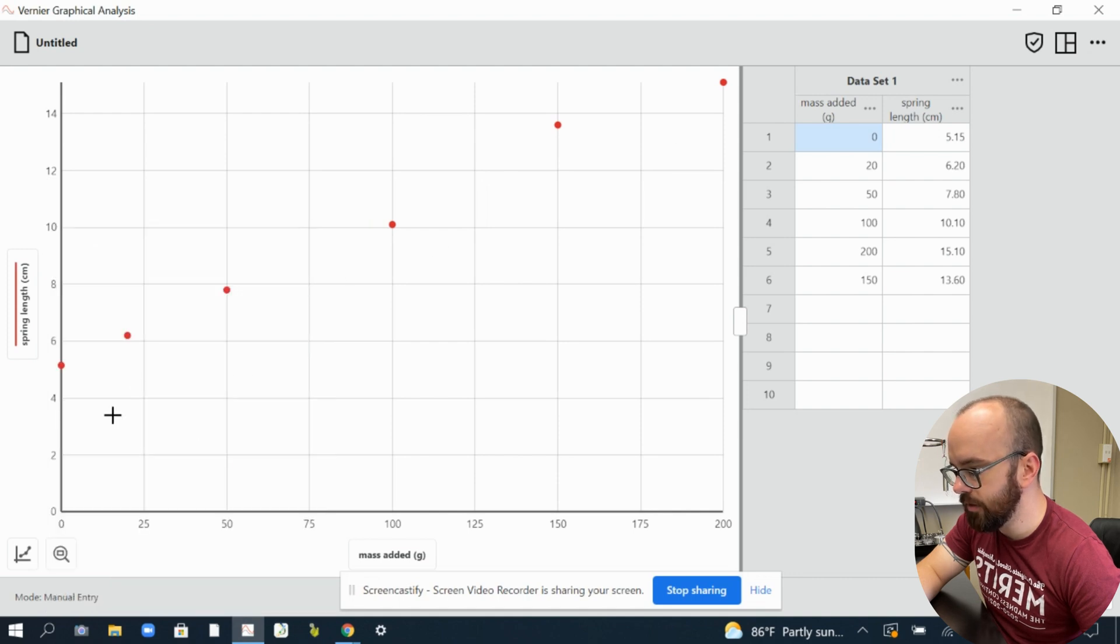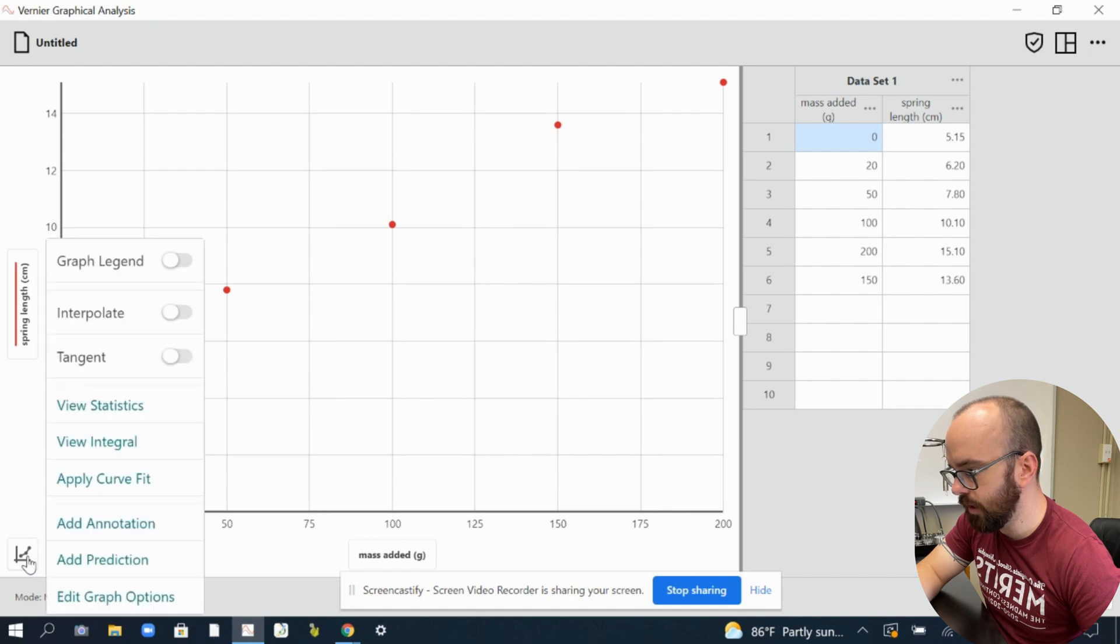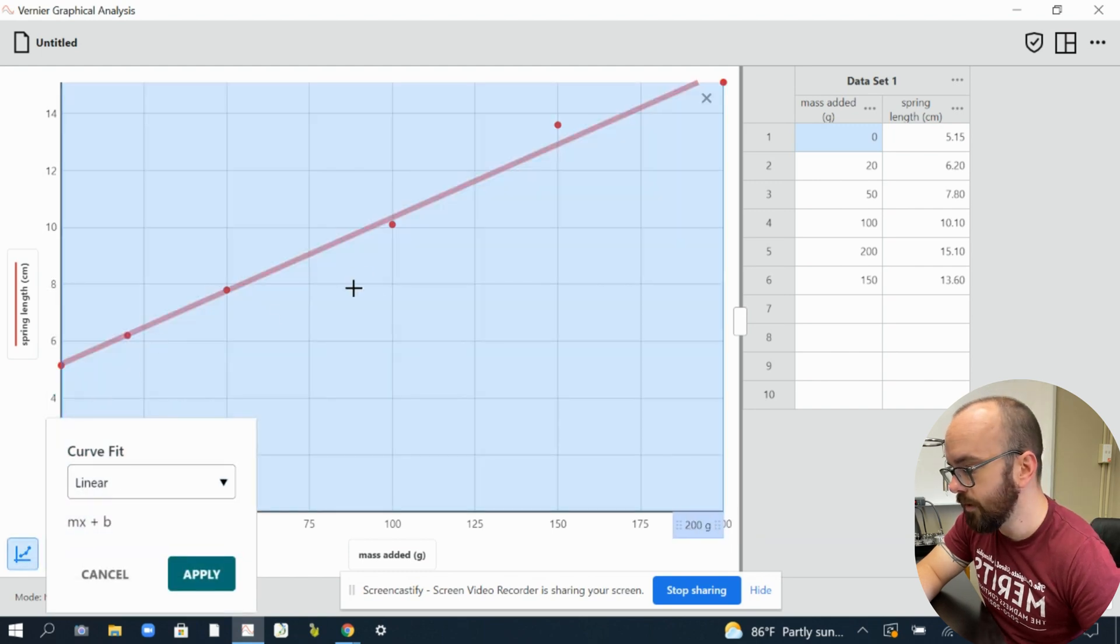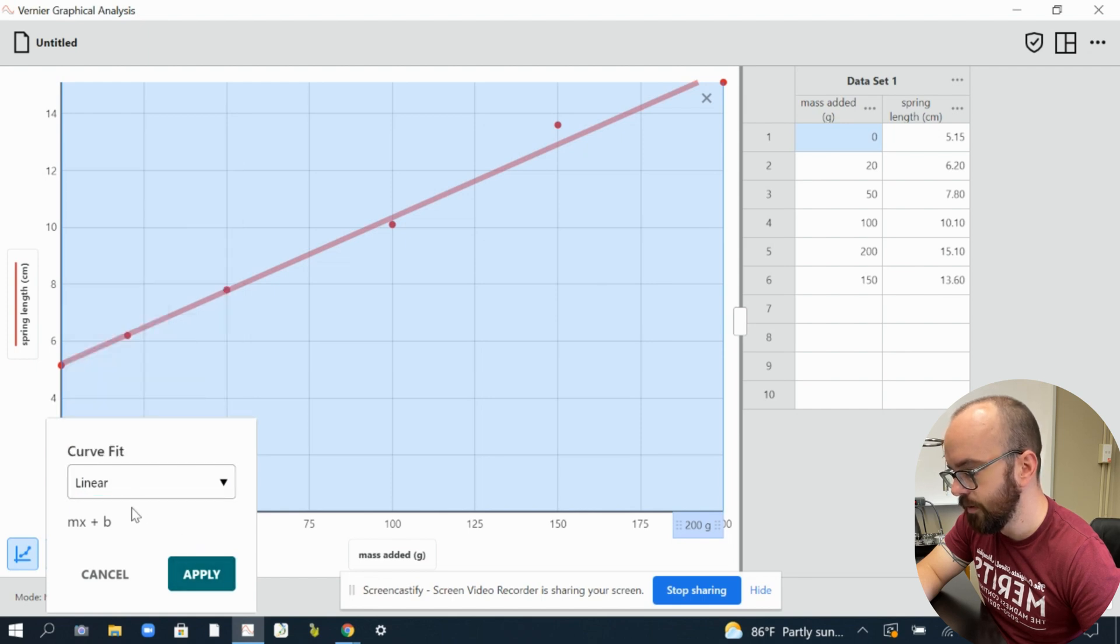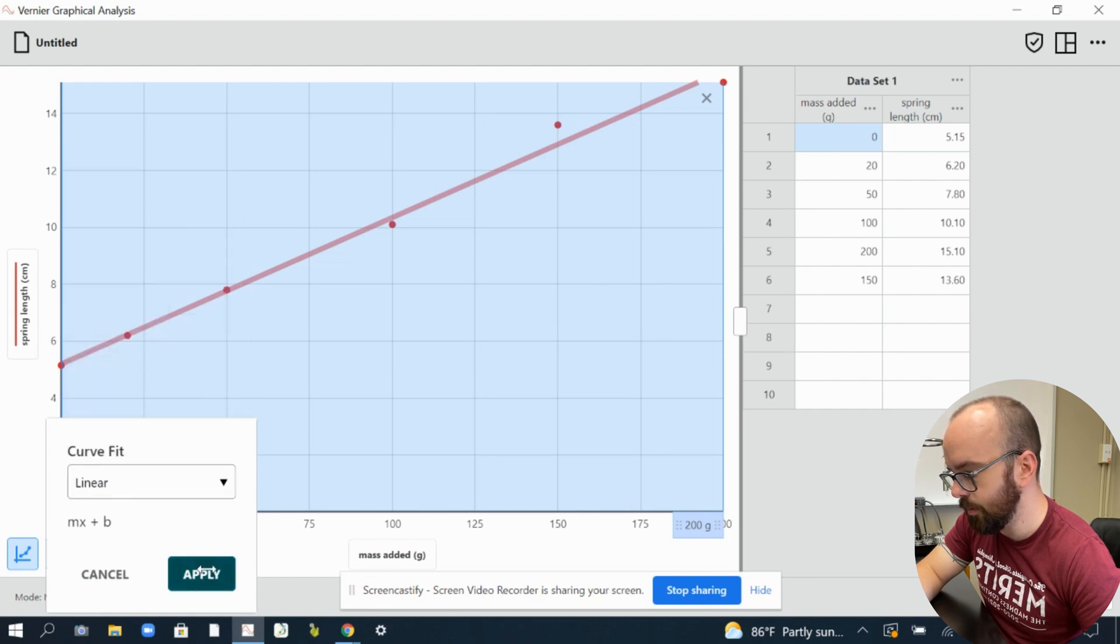So the next thing I want to do to actually do the trend line is I'll click there and I'm going to apply a curve fit. They don't call it a trend line, they call it a curve fit. And so I've got a linear. If I wanted some other thing, if this was a quadratic or something, I would choose another one, but I know this is linear. So I'm going to click that. I'm going to click apply. And then it gives me this. It tells me Y equals MX plus B. It gives me an M and it gives me a B.